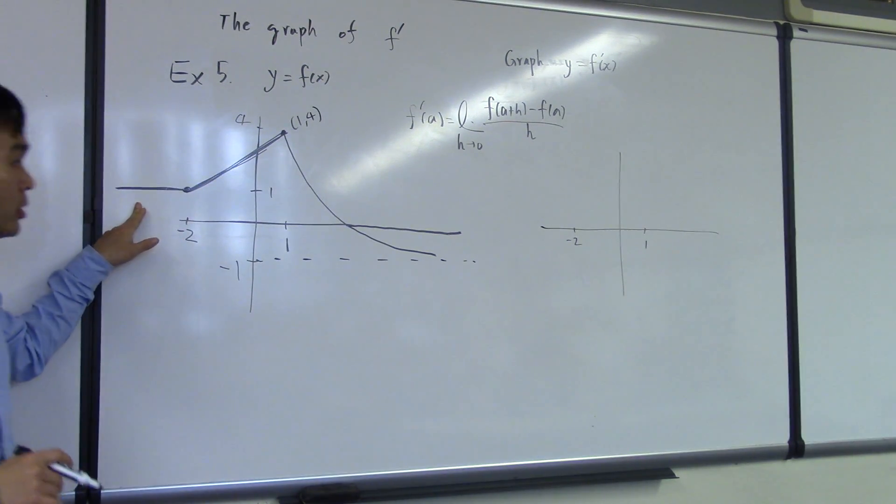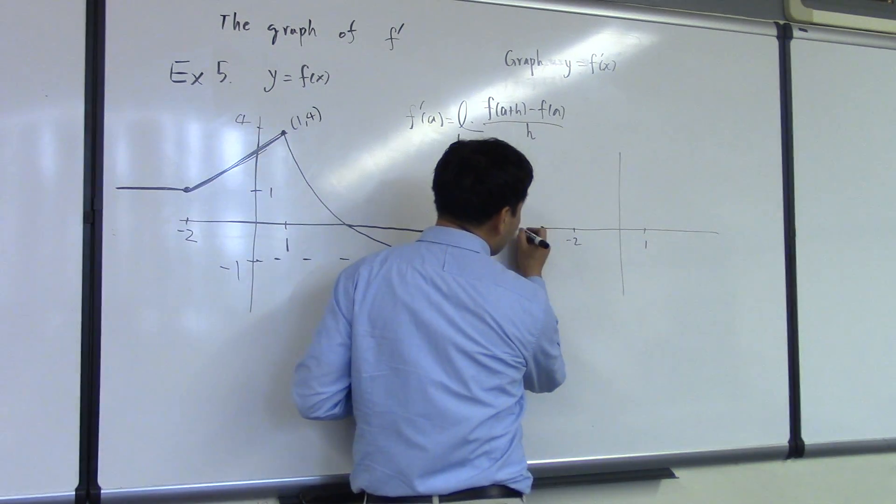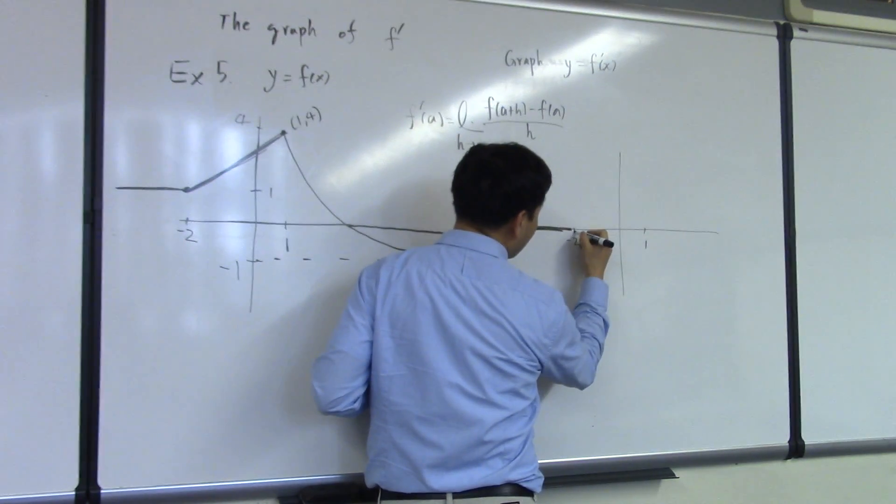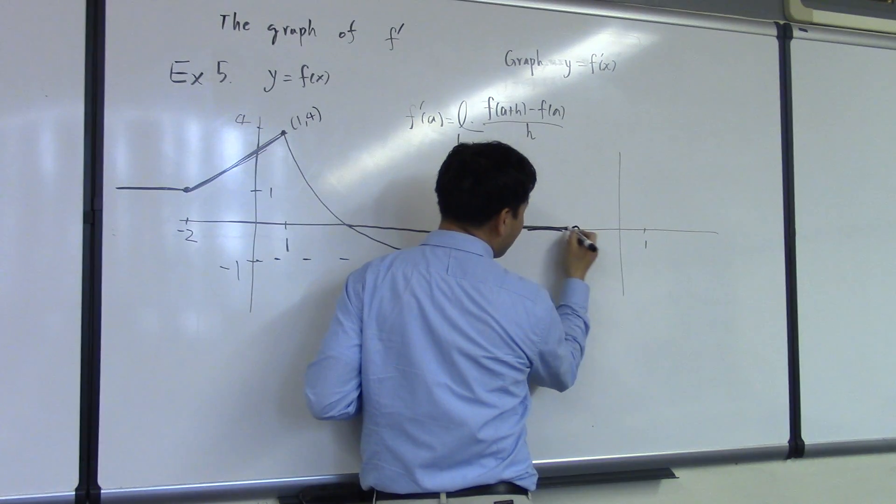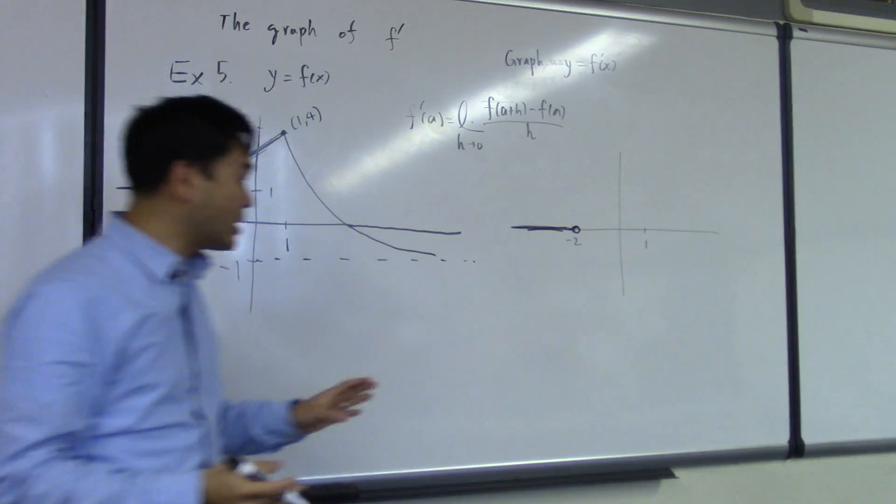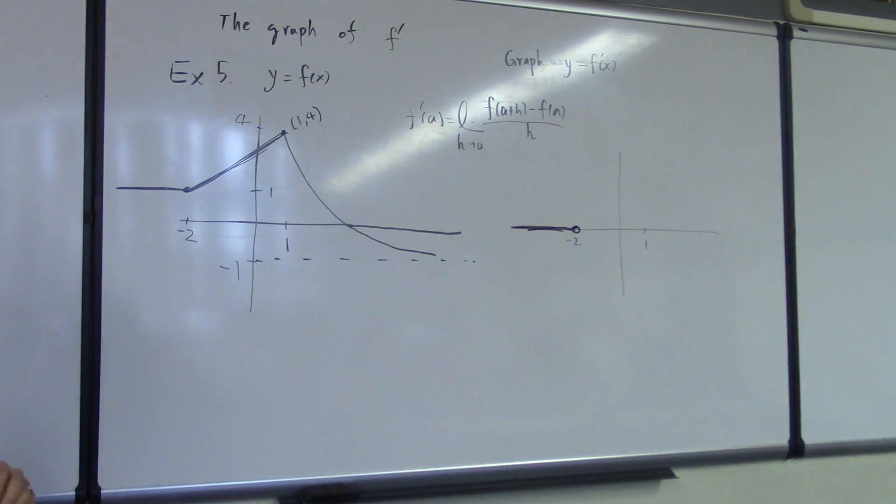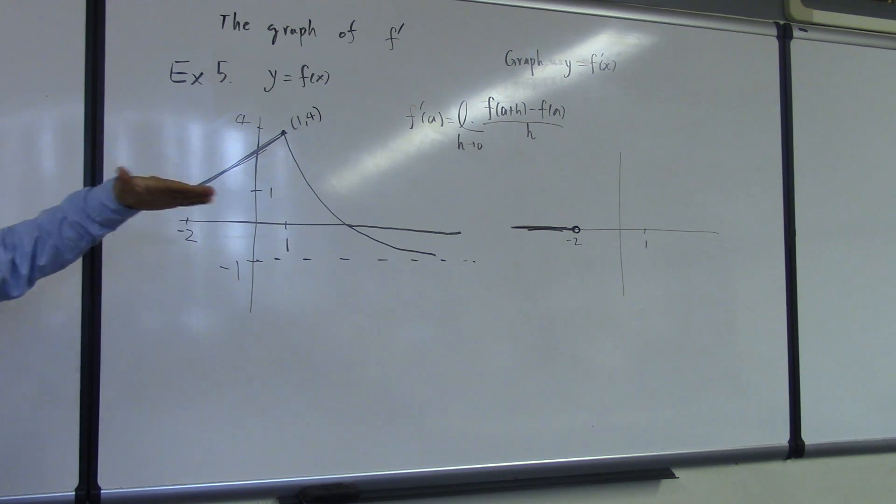Zero. So, before negative 2, the slope will be zero. And I want to put an open circle at negative 2 because the value doesn't exist there. Slope is zero because it's a line. A tangent line to the line is just the line itself. So, you just have to think about the slope of this graph at that point. Because it's horizontal, the slope is zero.